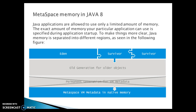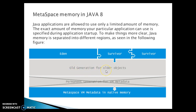MetaSpace memory in Java 8: prior to Java 8, the JVM HotSpot memory structure included Eden space, Survivor 1, Survivor 2, Old Generation for older objects, and PermGen or Permanent Generation for VM metadata. The Permanent Generation for VM metadata is completely removed from Java 8, and MetaSpace VM metadata has been added in native memory.